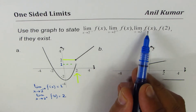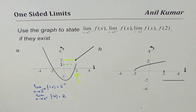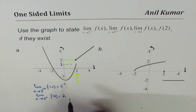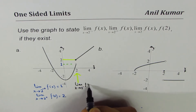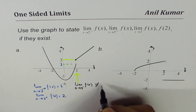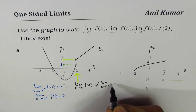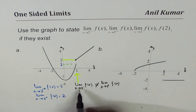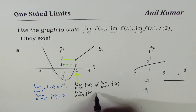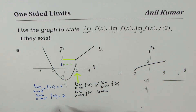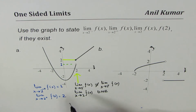Then we need to find the limit of the function at 2. At x equals 2, you can see that the limit from the left side is not equal to the limit from the right side. The limit as x approaches 2 from the left of f of x is not equal to the limit as x approaches 2 from the right of f of x. Since they are not equal, the limit as x approaches 2 for f of x does not exist.